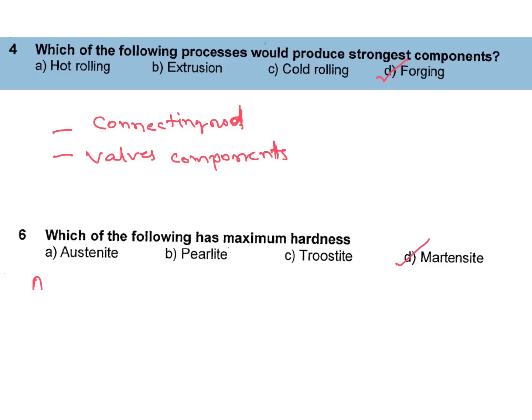Austenite, also called gamma iron, is found above 723 degrees Celsius, the critical eutectoid temperature. Above this temperature you will get eutectoid temperature, 723 degrees Celsius.